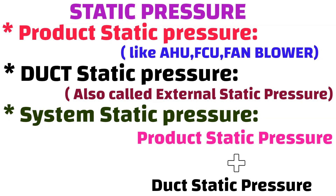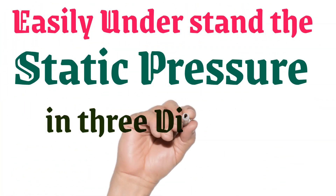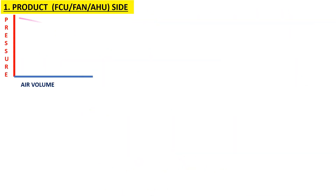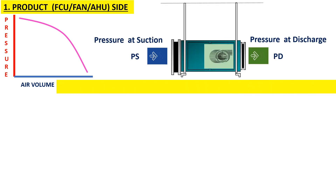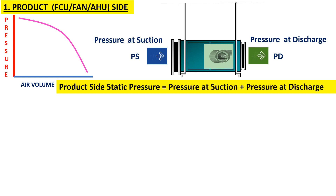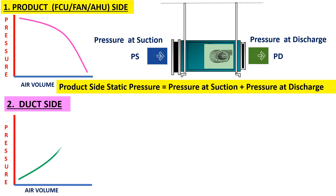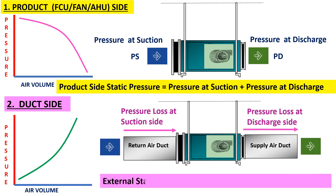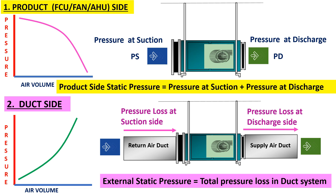First, product side static pressure refers to the static pressure at the product, such as an AHU or fan coil unit. The fan curve shows various static and air volume conditions. Product side static pressure equals pressure at the suction side plus pressure at the discharge side. Second, duct side static pressure is also called external static pressure. This curve shows duct static pressure equals external static pressure.